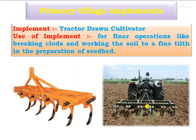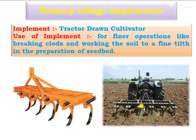Next implement is the tractor-drawn cultivator. This is a cultivator which is used for finer operations like breaking of clods, working the soil to a fine tilth in the preparation of the seed bed, removal of weeds, as well as stubbles of the previous crop, and mixing of the organic fertilizers.